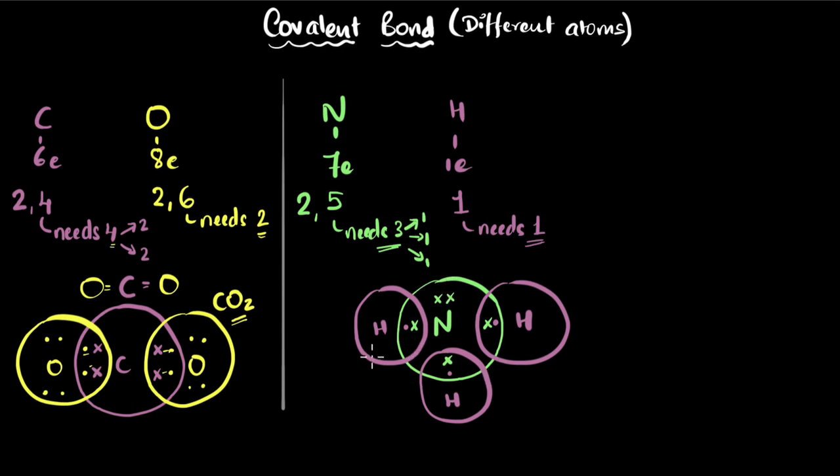But total, it now has access to eight. Nitrogen is happy. Hydrogen has its own one, but total it has two. So hydrogen is also happy. Everything is filled.